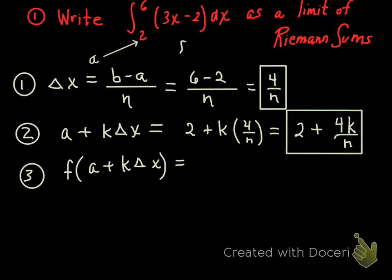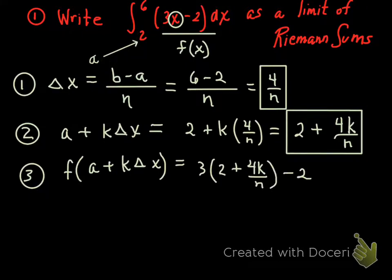I've got to compose the function f by substituting a plus k delta x whenever I see an x. Remember, f of x is right there in the original problem, and whenever I see that x, I'm plugging in a plus k delta x. The truth is, I take that function, it says 3 times x. So I now go 3 times the stuff in step 2. 3 times quantity 2 plus 4k over n. Don't forget that minus 2 in the original function.